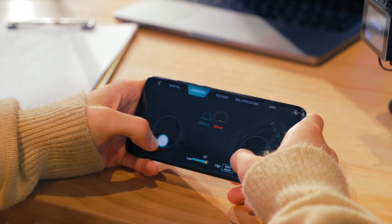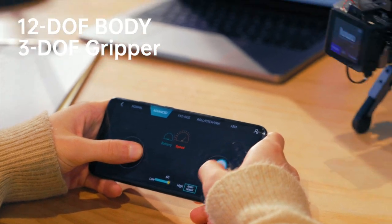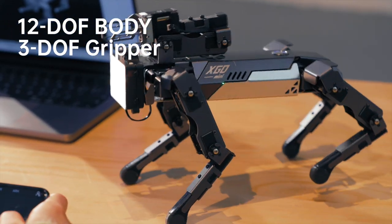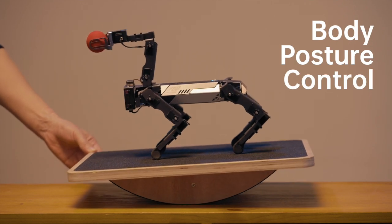With 12 degrees of freedom joints control and 6-dimensional body posture control, XGO 2 can achieve omnidirectional movement, adapt to ground tilting and maintain body balance.